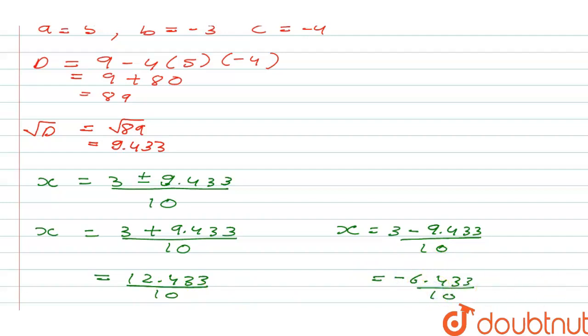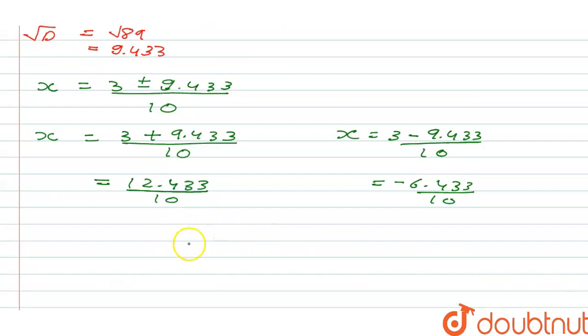So this is going to give us x equal to two values, that is 1.243 because we had told in the equation that we need to find till three significant figures only.